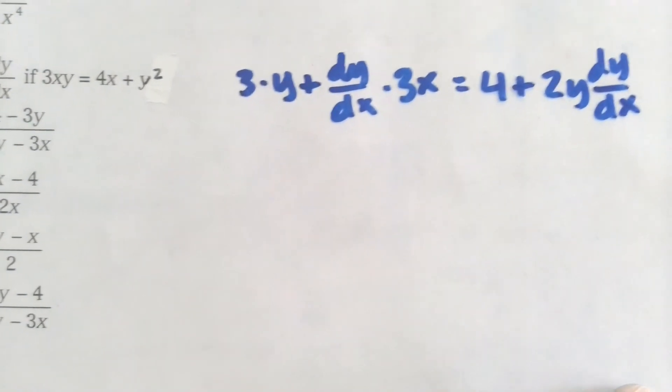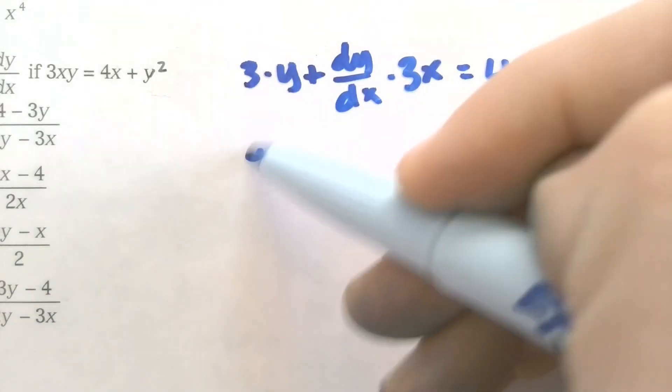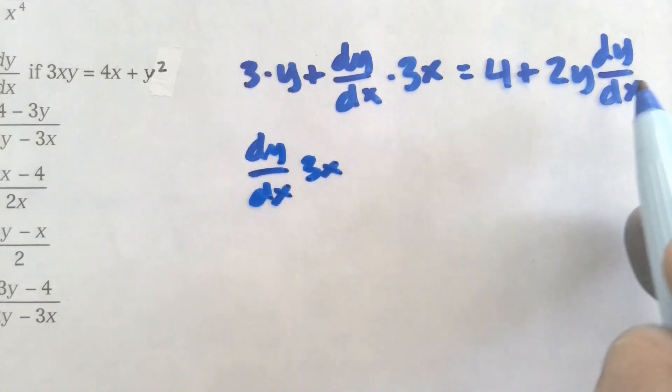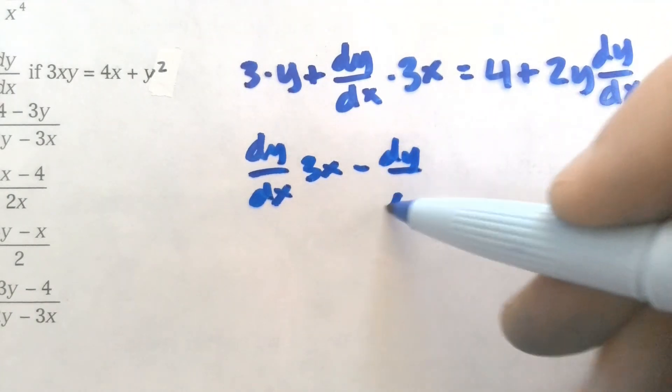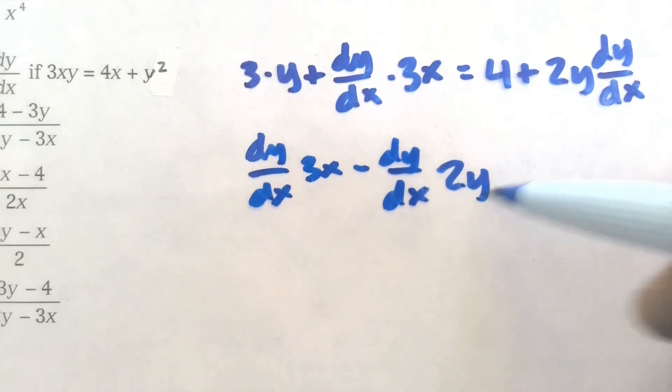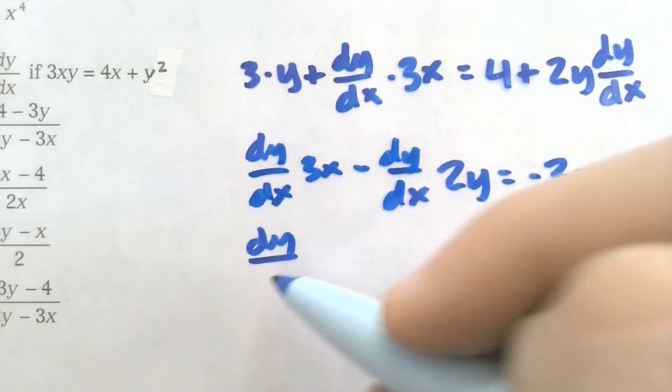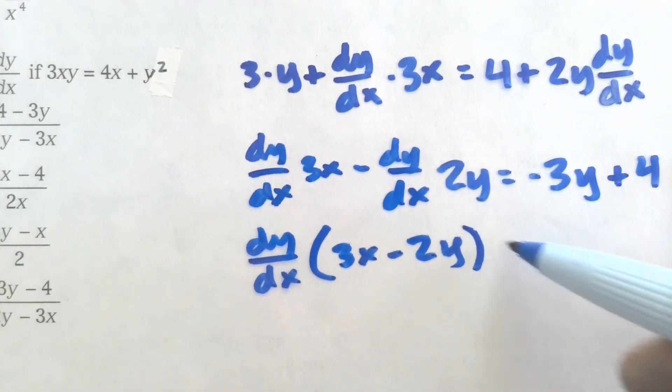Now to simplify something like this, when we're trying to solve for the dy dx, remember that we want anything with a dy dx in it on one side. So I'll keep my dy dx times 3x on this side. I want to subtract over my dy dx times 2y. And then I'll subtract over my 3y to where it's on the other side.